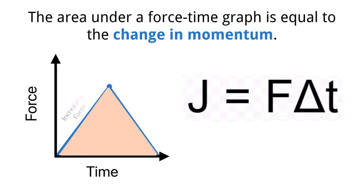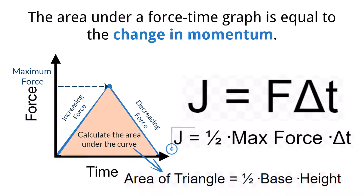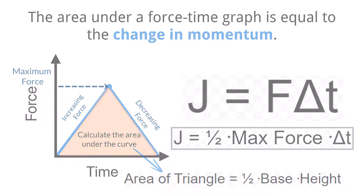Let's take a look at the example of force being steadily increased on an object, reaching a max, and then steadily decreasing. This would result in a force-time graph that looks a lot like a triangle. To then find the change in momentum of the object, a calculation is made using the area of the triangle and the values from the graph. In this case, the calculation is one half the max force times the change in time.